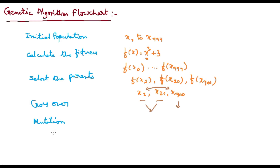Then, if it is good, that is the stopping criteria. If this is good — for example, we have done this and obtained the new solution — if the new solution has very good fitness, then we can stop our genetic algorithm here. This is the stopping criteria.